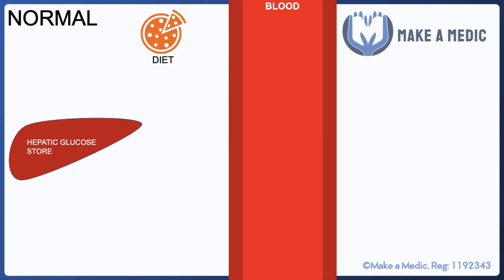To understand DKA, we must first look at how blood glucose levels are regulated within the body. Under normal circumstances we have a certain concentration of glucose within the blood. The main source of that glucose will be our diet — when we eat any meal that has carbohydrates in it, that'll be broken down and absorbed, causing a rise in the serum glucose concentration.